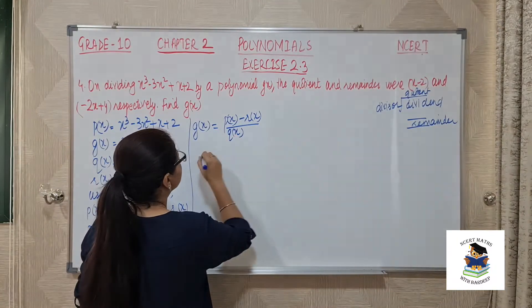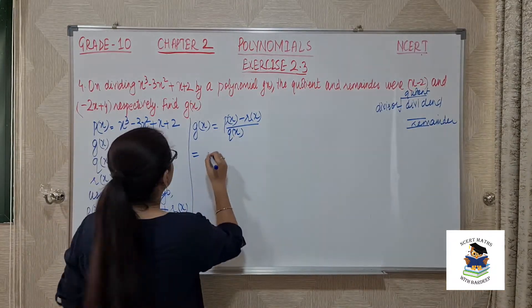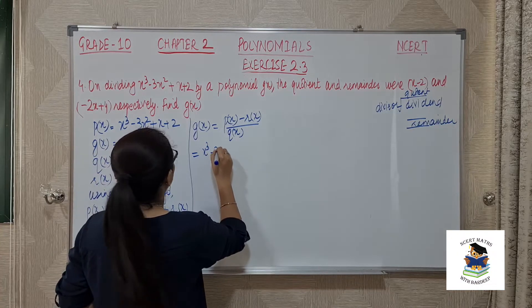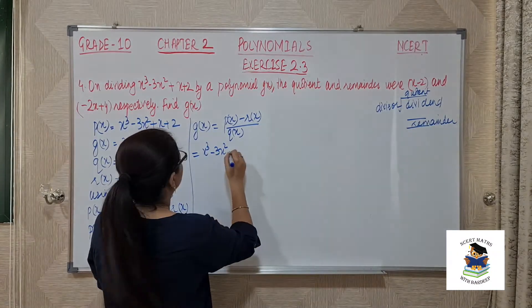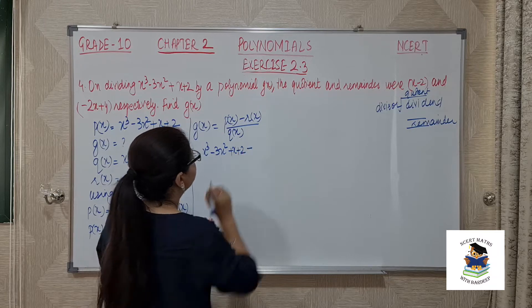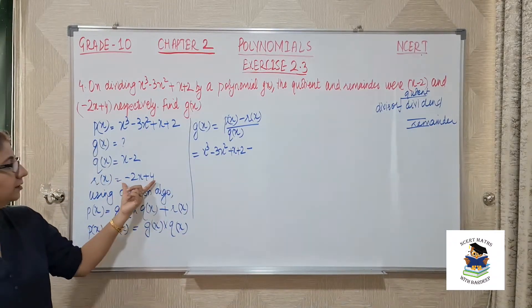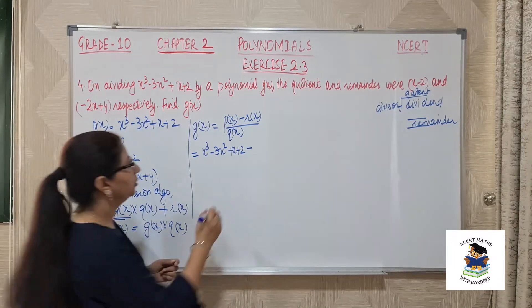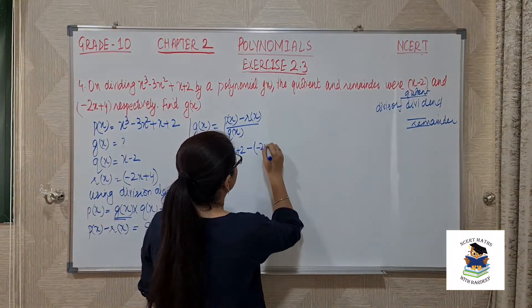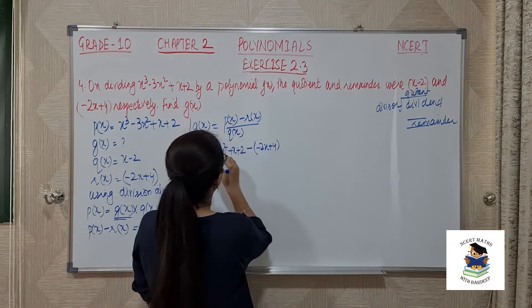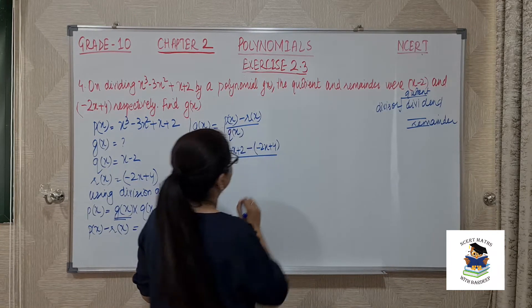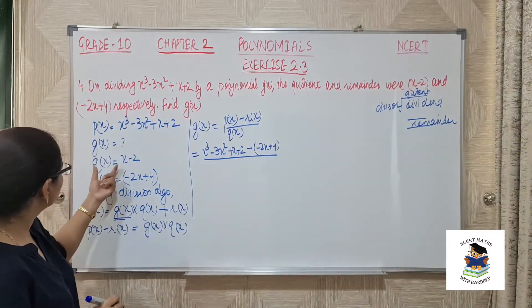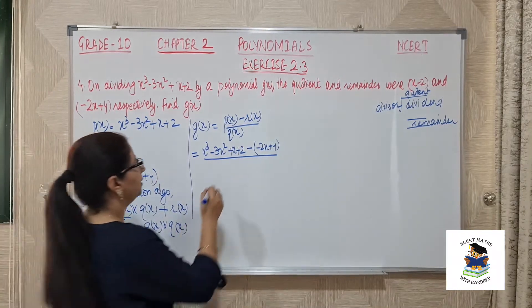Now let us substitute the values. px is x cube minus 3x square plus x plus 2 minus remainder. Remainder is minus of 2x plus 4. So we will write minus. Please be careful with the signs, because otherwise we will get wrong answer. qx is x minus 2.